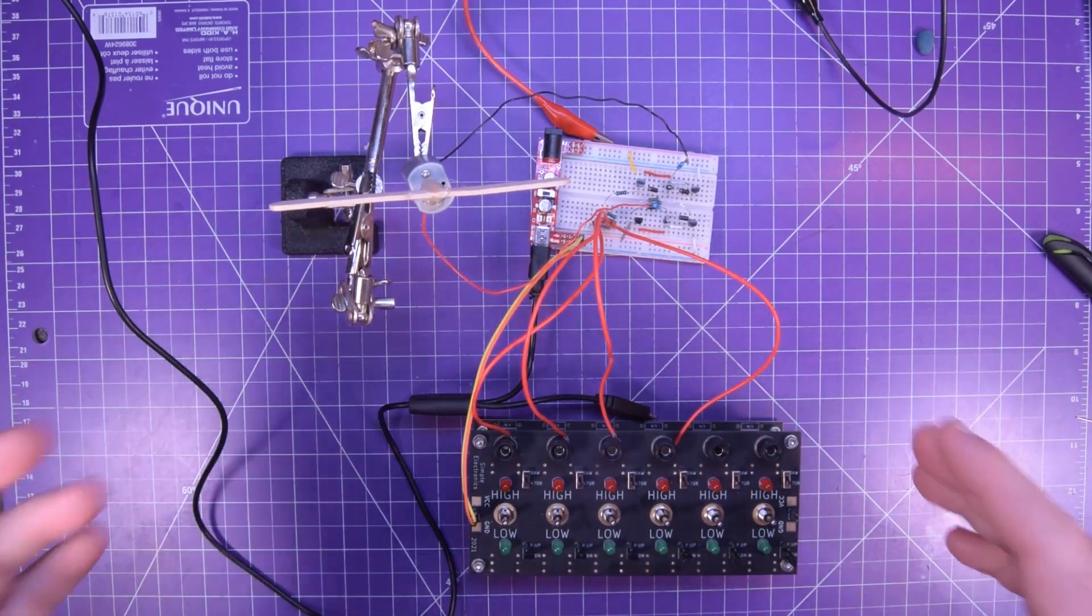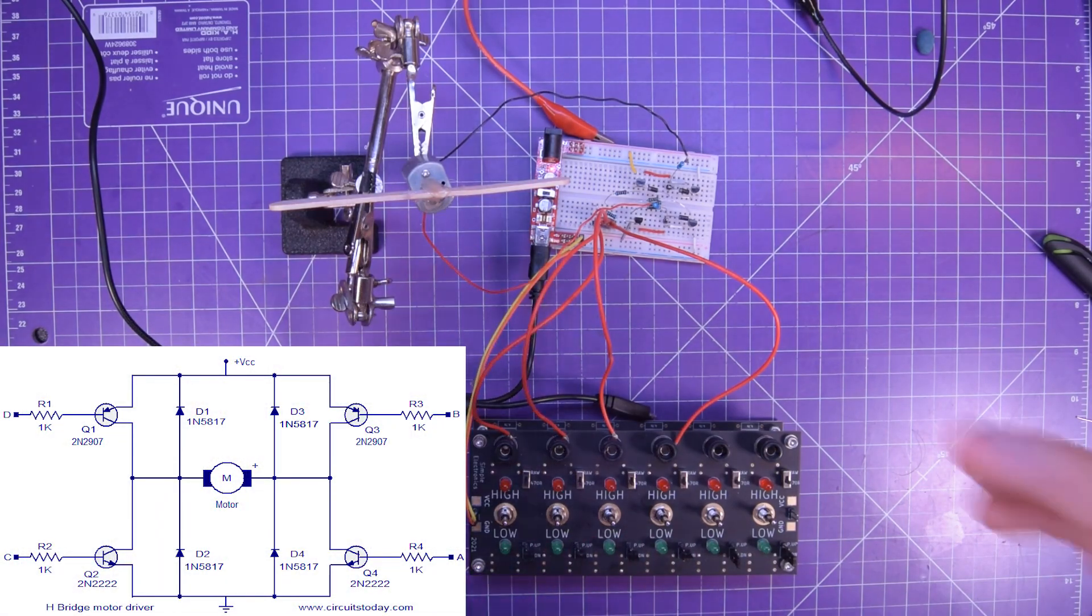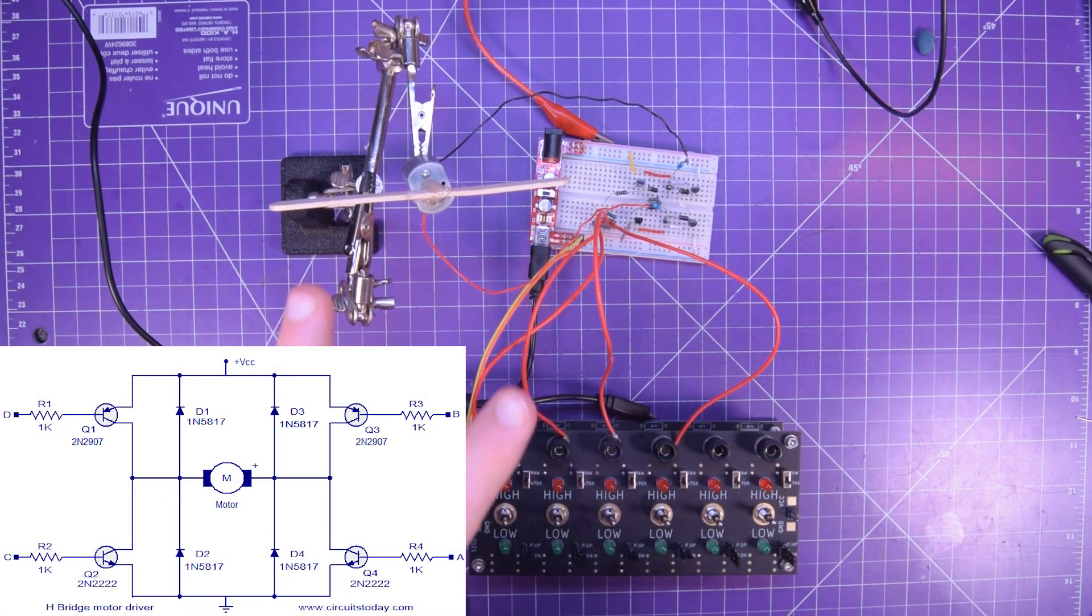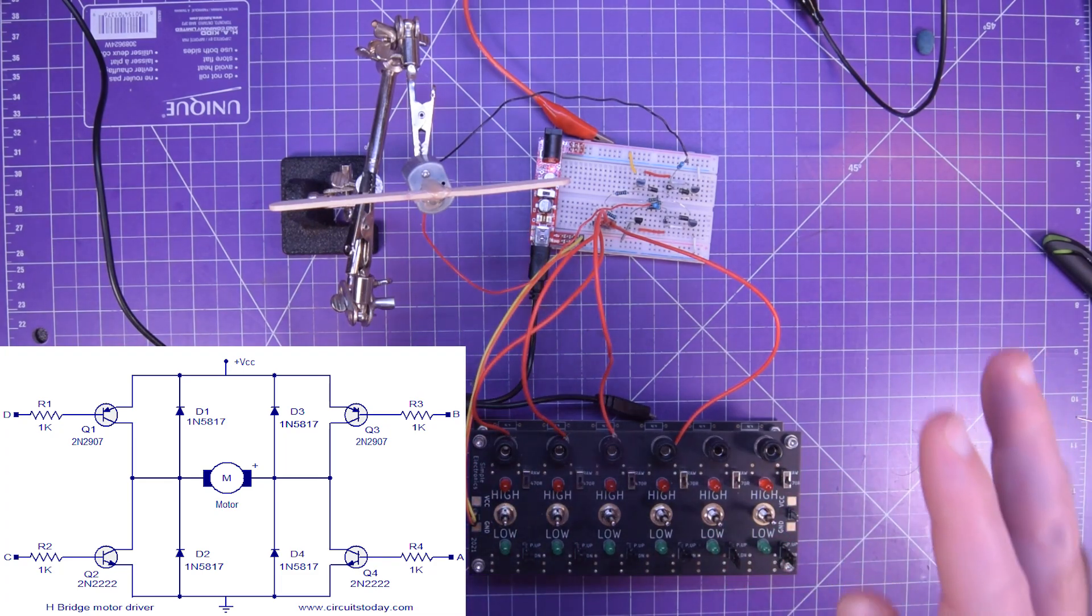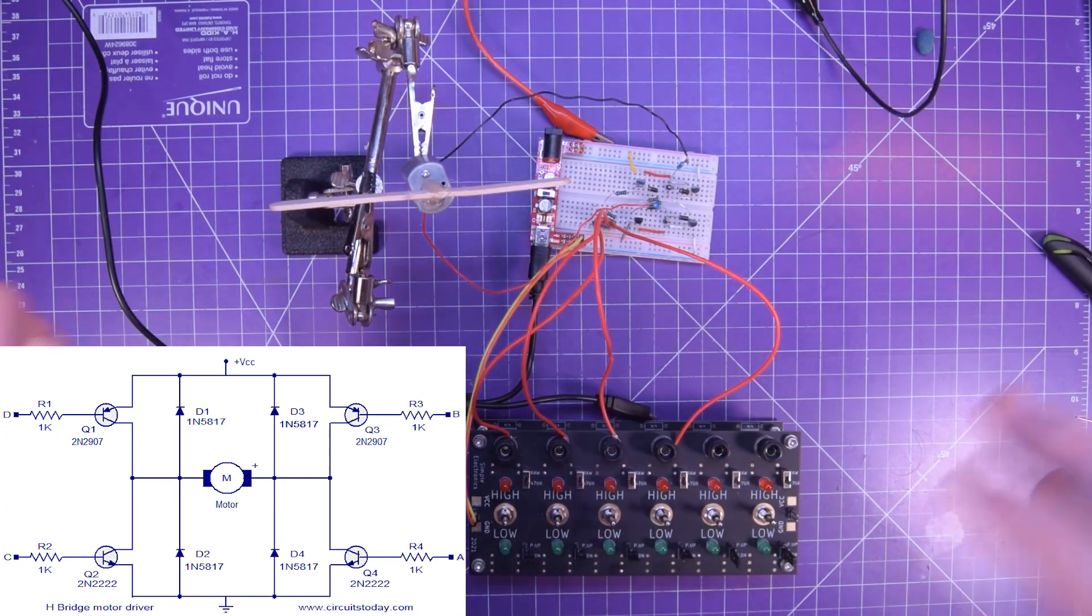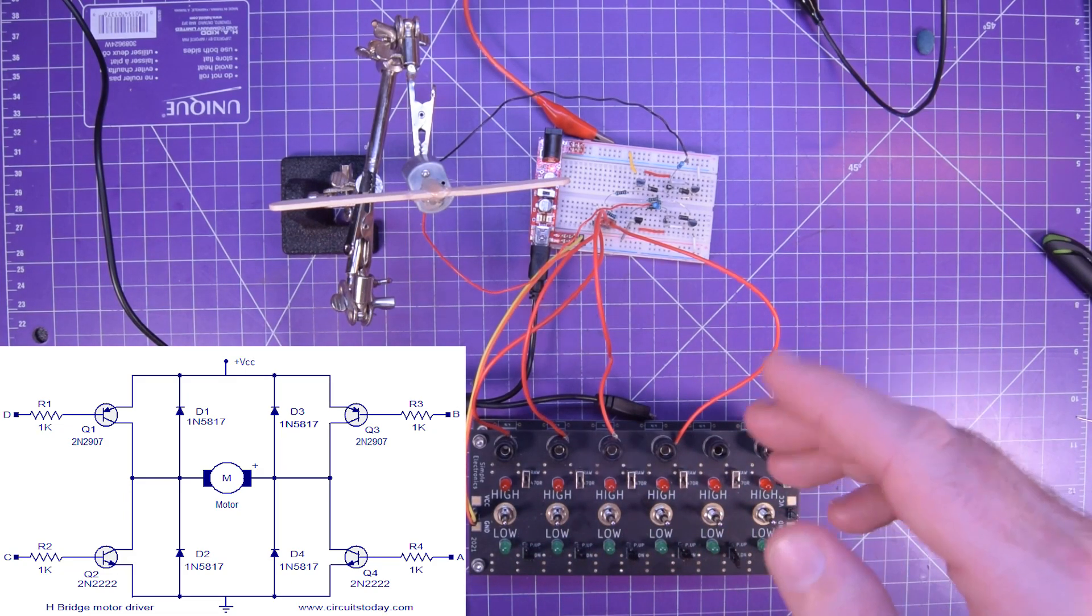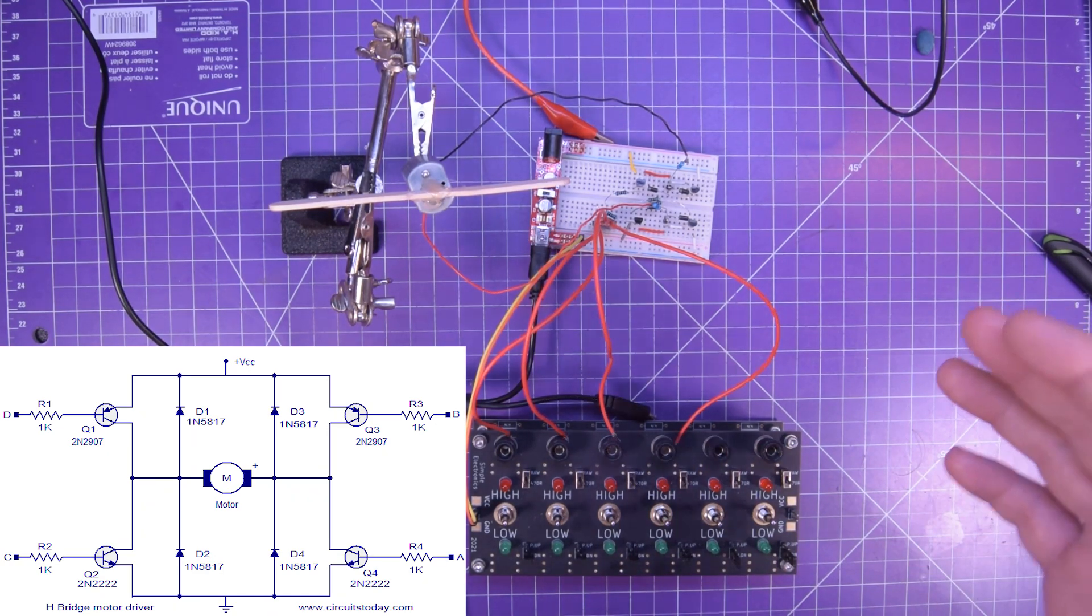So if you're a beginner, the diagram I'm about to put on the screen will look complicated. But trust me, it is not. It is just two NPN transistors—pretty much any of them will work—two PNP transistors, again pretty much any of them will work, any of the basic ones, four diodes and four resistors. They're just arranged in a specific arrangement. Then all you have to do is send high and low signals in diagonal and you're good to go.